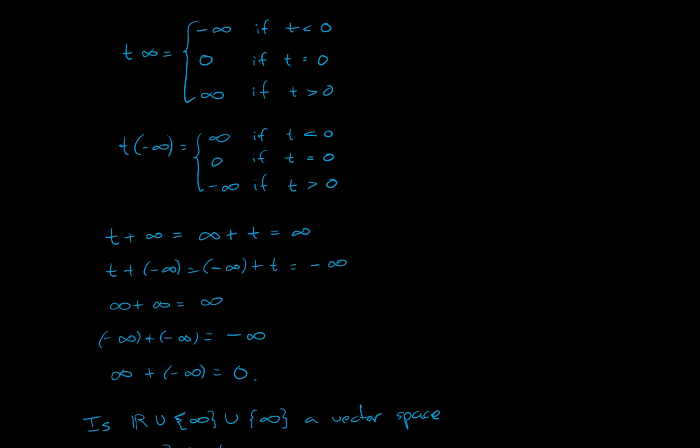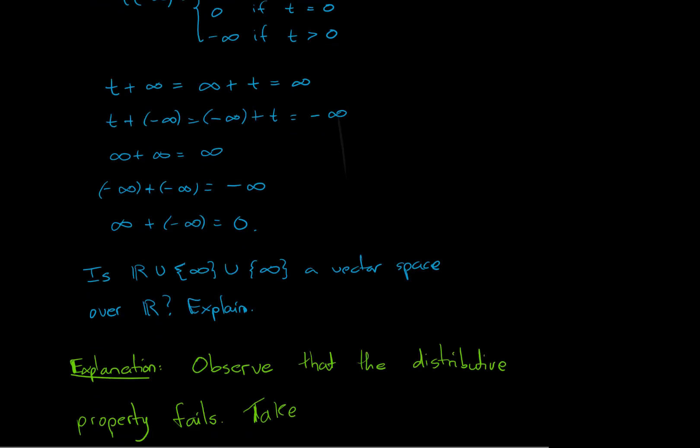All of these together are very tricky, they can look like they satisfy all the conditions of a vector space. But actually, they don't. Because if you observe the distributive property: